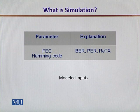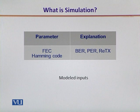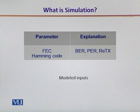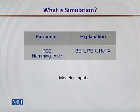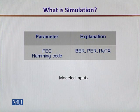Similarly, the forward error correction strategy that we want to implement and simulate in our network scenario. An example is the Hamming code, which will have a direct impact on the retransmission cost besides the bit error rate and the packet error rate performance.